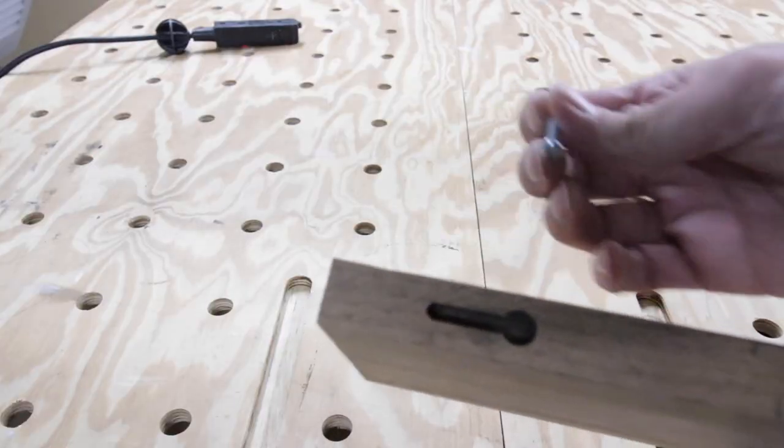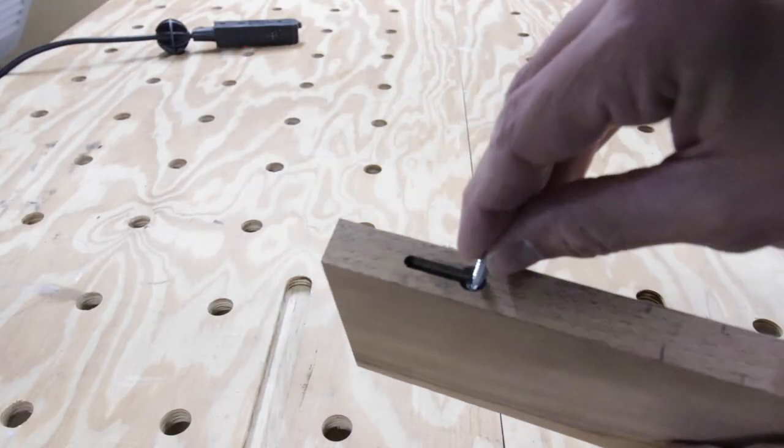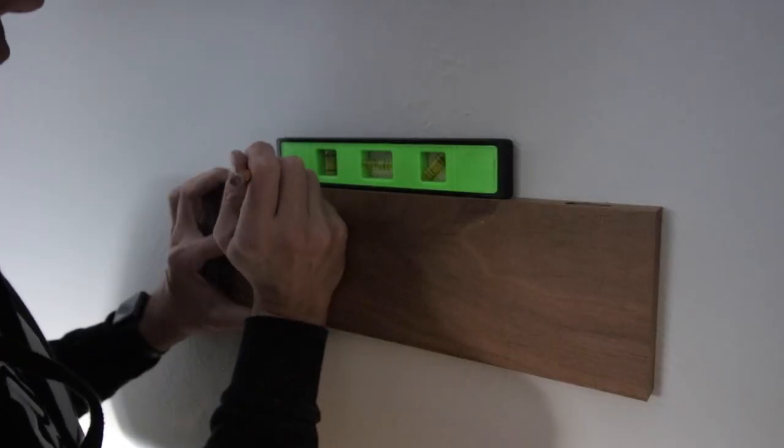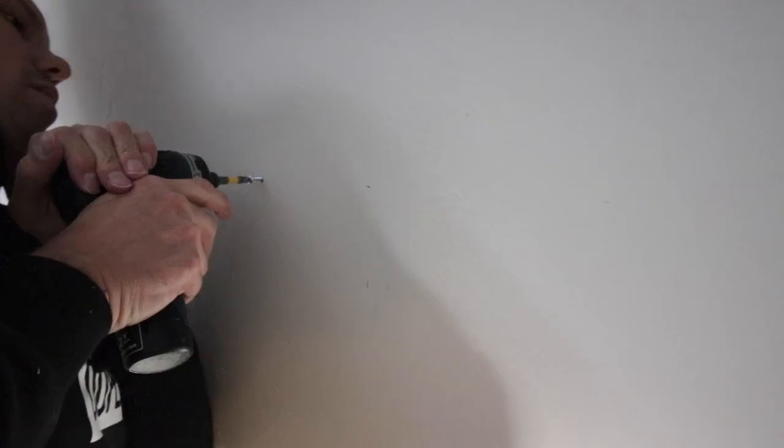So the way it'll work—I'll screw the screw into the wall, and then that head will go through that hole and down that channel. Back on the wall, I did my final marking and made sure the board was nice and level.